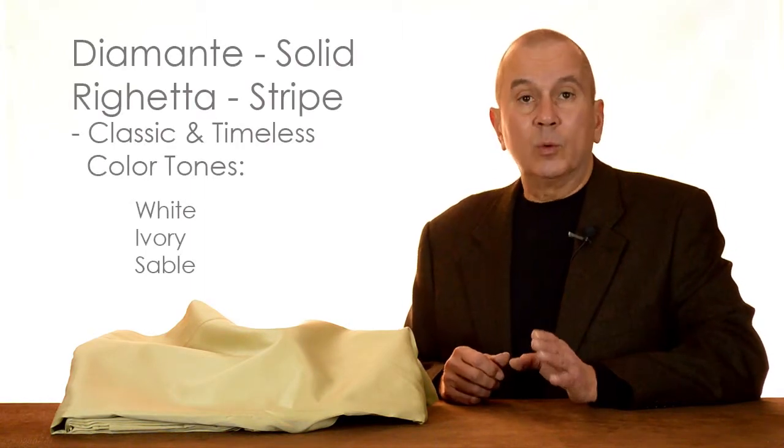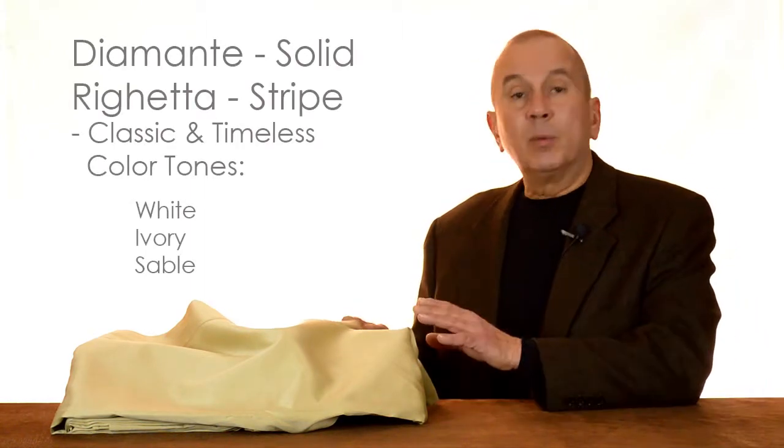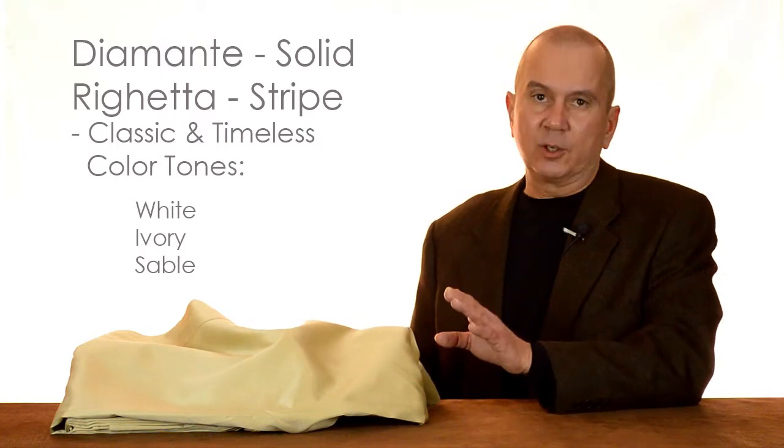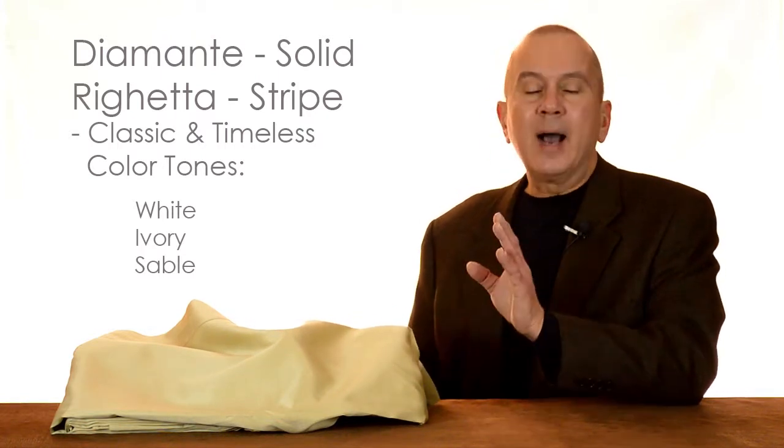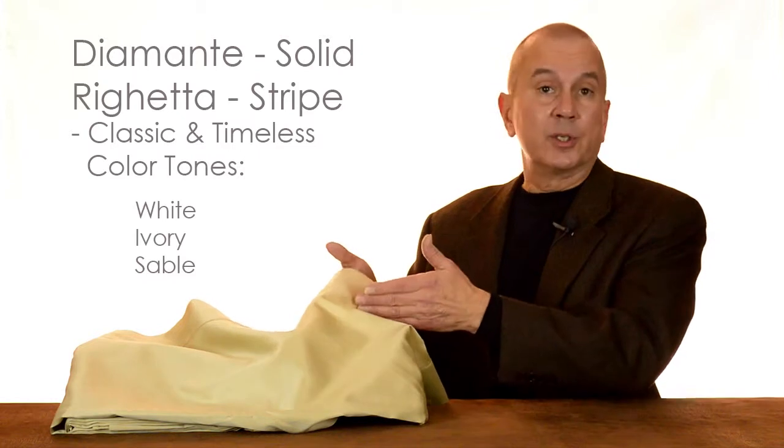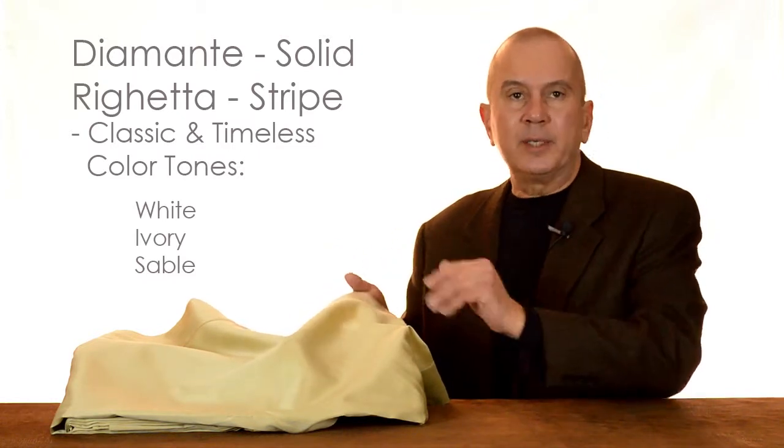Our Diamante fabric, which is a solid, and our Regatta fabric, which is a stripe, are available in classic and timeless color tones: white, ivory, and sable. Shown here is the sable, a medium light to medium tan.